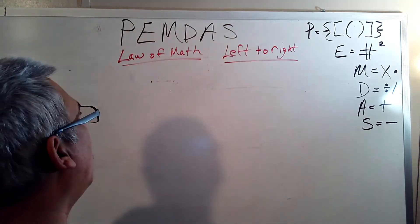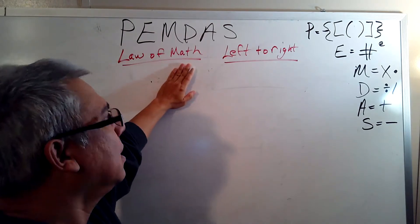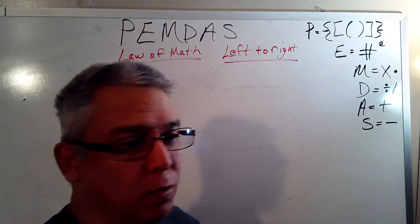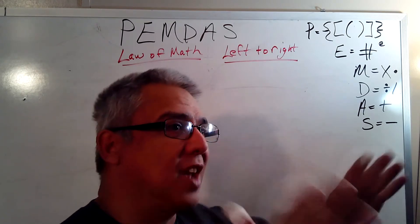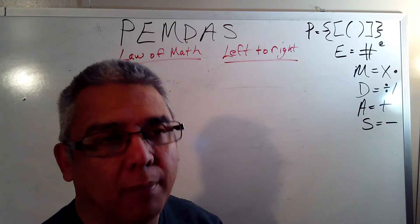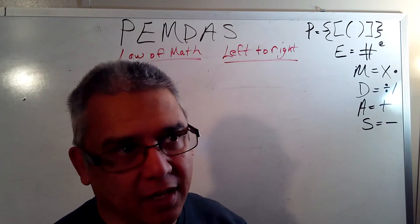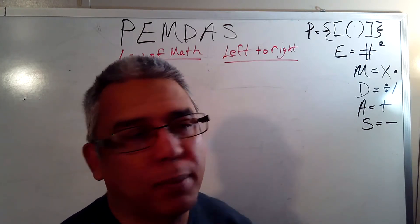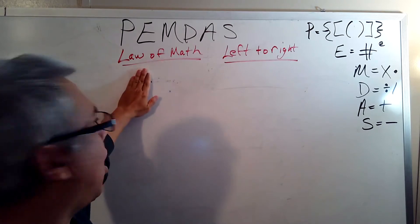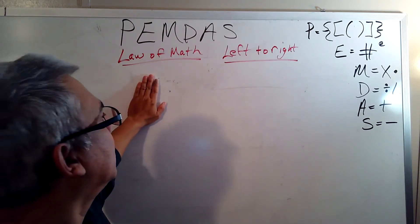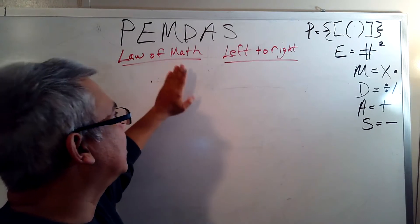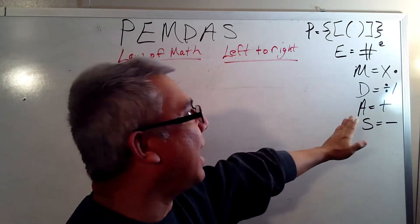So please excuse my dear Aunt Sally. This is what I call the law of math. When you drive down the road, well not you, when your mom and dad are driving down the road and they see a stop sign, they stop. They don't want to get a ticket and they don't want to crash, but they stop because it's the law. Well, this is the law of math. Please excuse my dear Aunt Sally, and we do it from left to right.